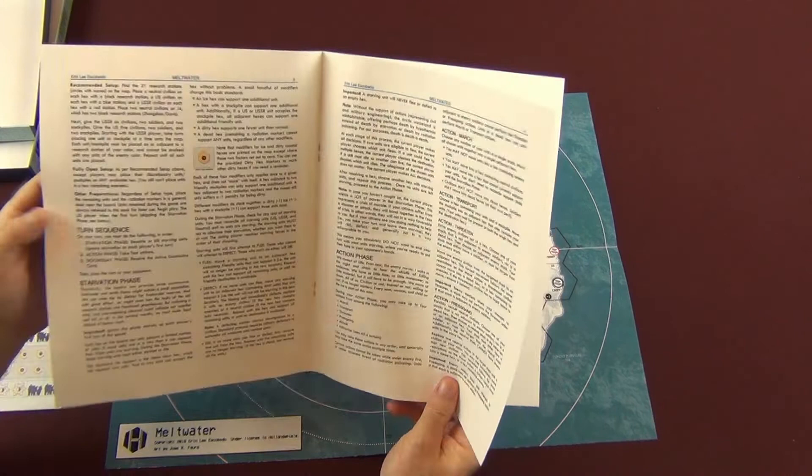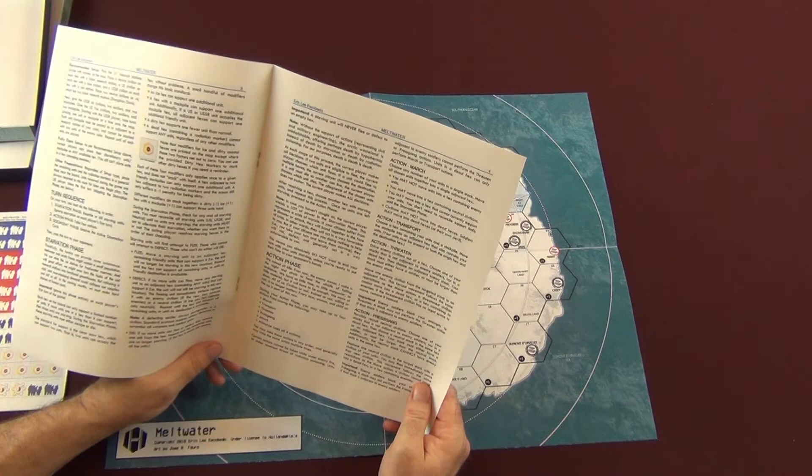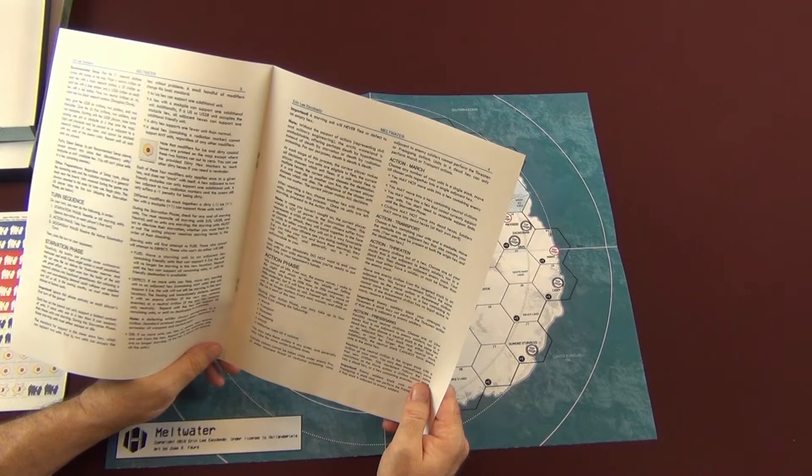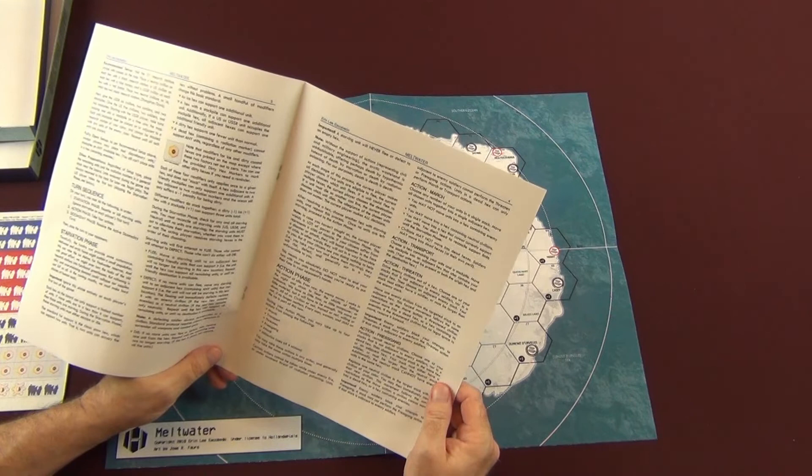Then you have your action phase. You can take up the four actions from among the following: march, transport, threaten, press gang, attack, militarize, which uses all four of your actions. Then you have the march action allows you to move any number of units in a single stack can move to a single adjacent hex. It's got some rules as far as where you can move, can't move.